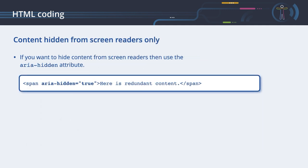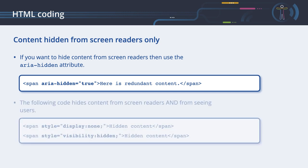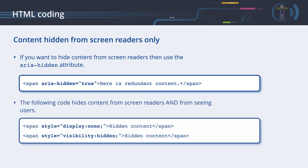Content hidden from screen readers only. If you want to hide content from screen readers, use the ARIA hidden attribute. Please note that the display and visibility style properties hide content from both screen readers and sighted users. So do not use them to hide content from screen reader users only.